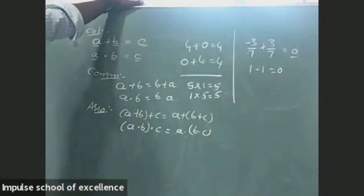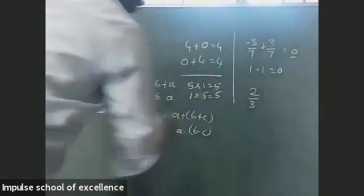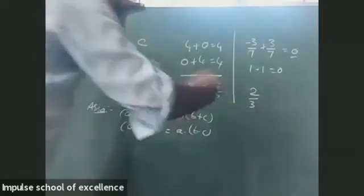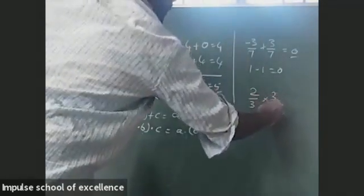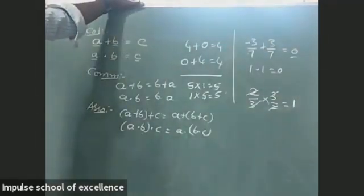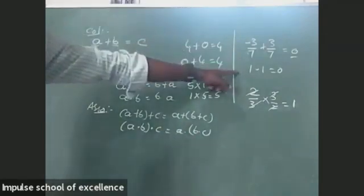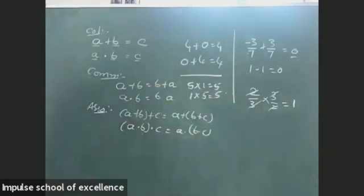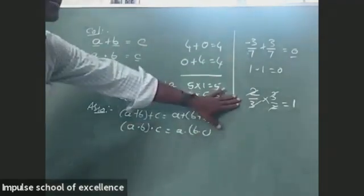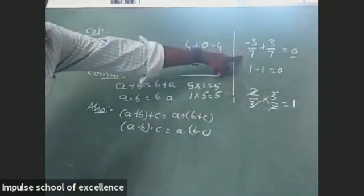In the same way, we have multiplicative inverse. For multiplicative inverse, 3/2 gets cancelled with 2/3 to give 1. So it is called multiplicative inverse. For 0, there is no additive inverse and no multiplicative inverse.